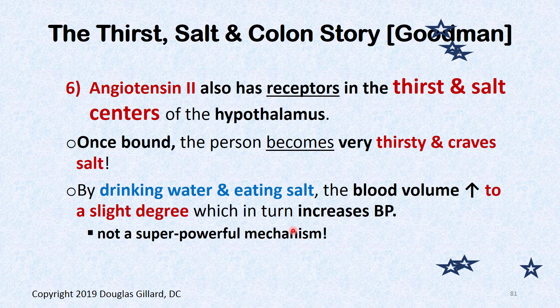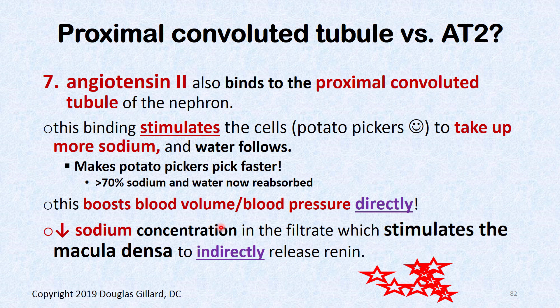Angiotensin II also has receptors on the thirst and salt centers in the hypothalamus. Once it binds, it makes a person very thirsty and craving salt. This can signal internal bleeding — if someone is badly hurt and super thirsty with no visible blood, that's a bad sign. By drinking water and eating salt, blood volume increases slightly. However, this is not a super powerful mechanism — not enough to save someone's life alone.